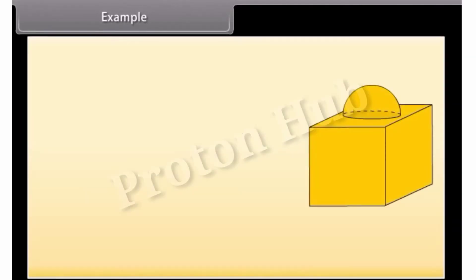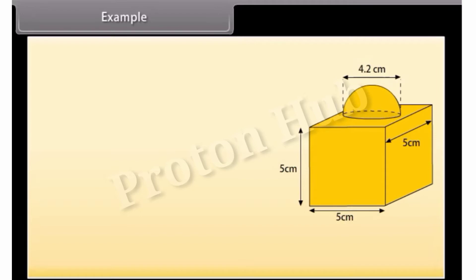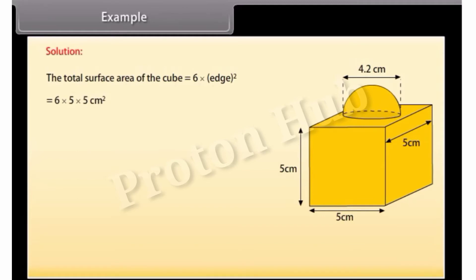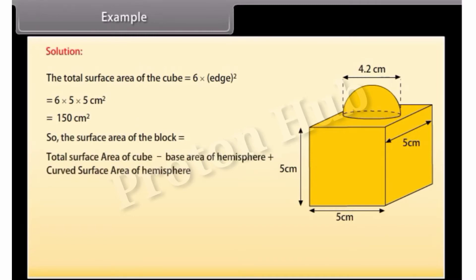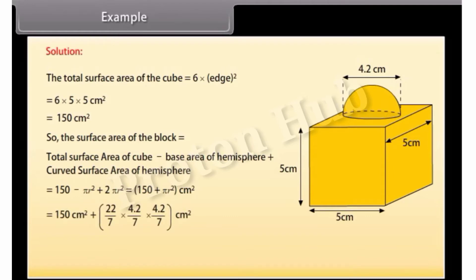Example: Look at the figure. This decorative block is made of two solids — a cube and a hemisphere. The base of the block is a cube with edge 5 cm, and the hemisphere fixed on the top has a diameter of 4.2 cm. Find the total surface area of the block. Solution: The total surface area of the cube = 6 × edge² = 6 × 5 × 5 = 150 cm². The surface area of the block equals total surface area of cube minus the base area of hemisphere plus the curved surface area of hemisphere, which gives 163.86 cm².